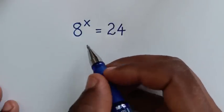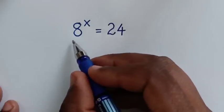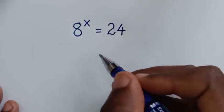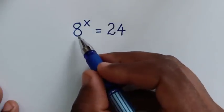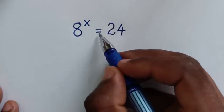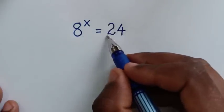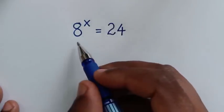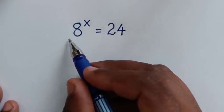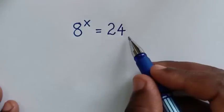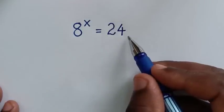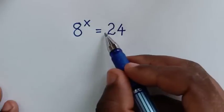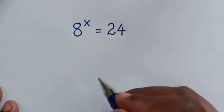Hello, you are welcome to solve this math problem, which is 8 to the power of x is equal to 24. To find the value of x from this equation, in the first step we will apply log to both sides.